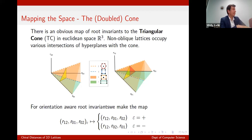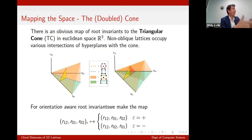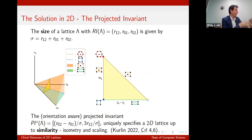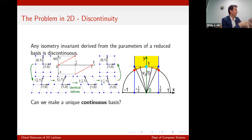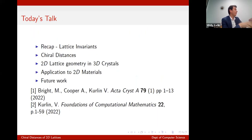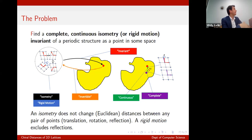The PDD approach throws away the basis entirely and just deals with the points, making everything continuous. So these are two different approaches. There's no obvious direct connection between lattice invariants and PDD invariants for more general periodic structures, however our theorem about generic completeness for PDD still requires a lattice.